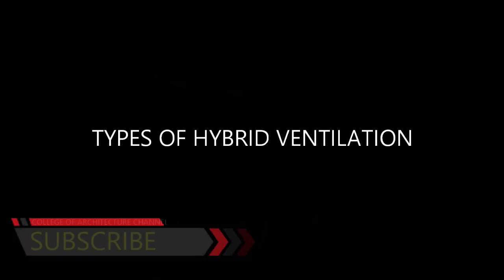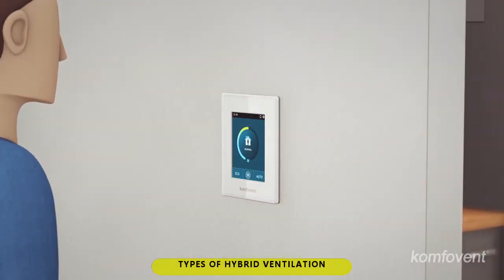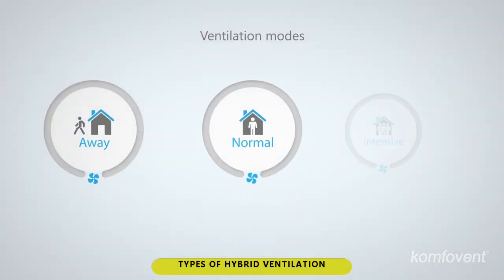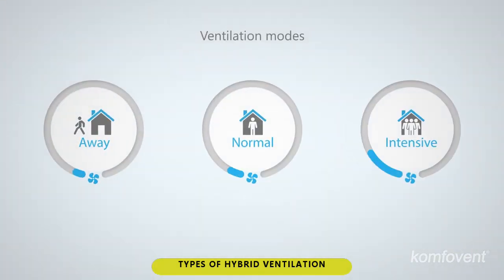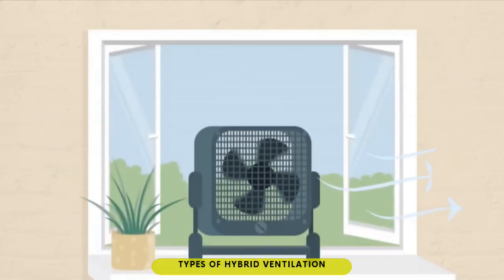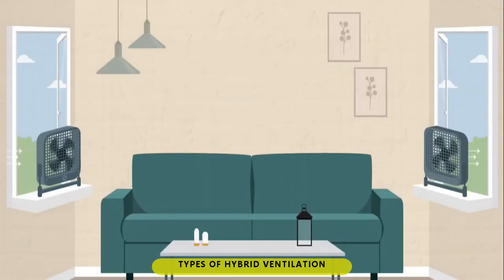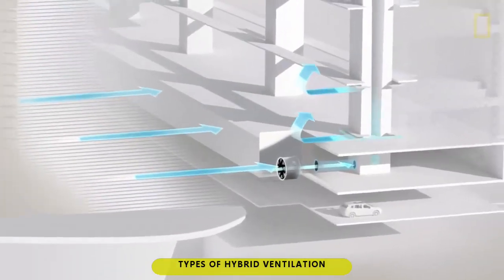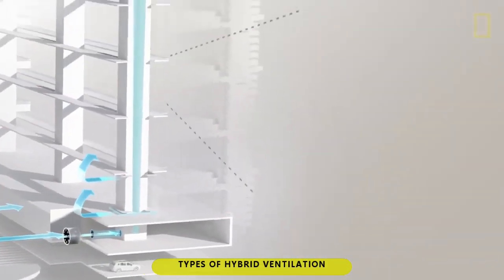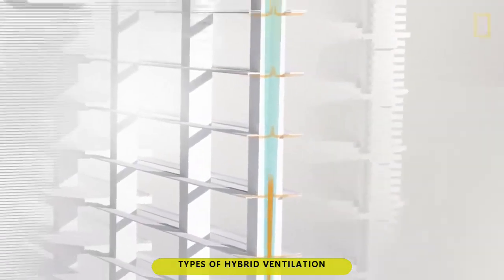Types of hybrid ventilation. 1. Alternate: uses mechanical ventilation at a certain time of the day. 2. Natural assisted: a natural ventilation that uses fans to enhance indoor air circulation. 3. Stack supported: a thermal buoyancy ventilation that is supported by a roof turbine.